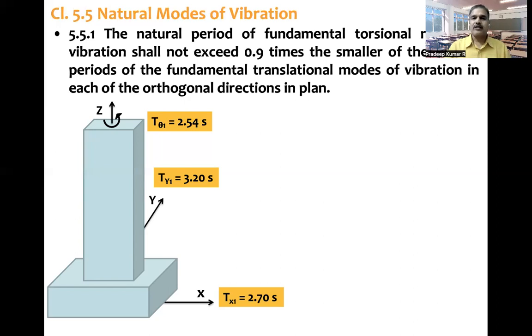Now let us understand this clause. What it says, that is torsion mode of vibration shall not exceed 0.9 times the smallest of Tx1 and Ty1. So when we look at the values, Tx1 is 2.7, Ty1 is 3.2. That means Tx1 is less than Ty1.